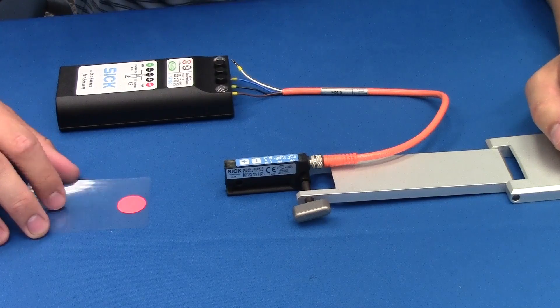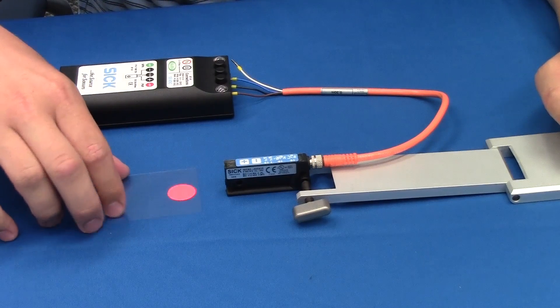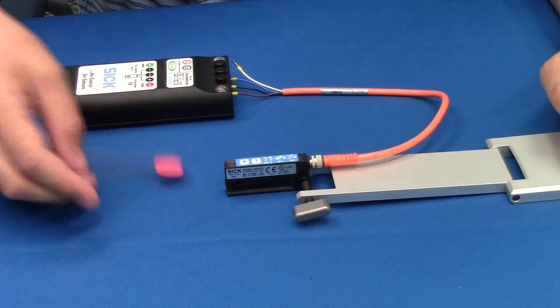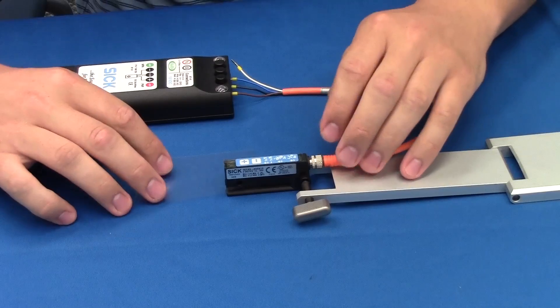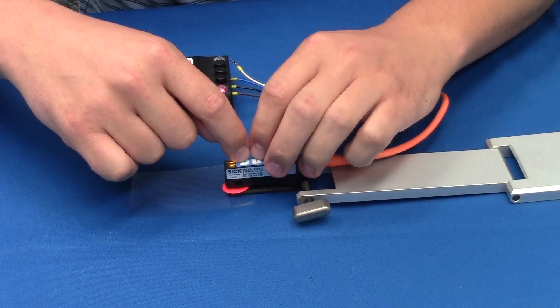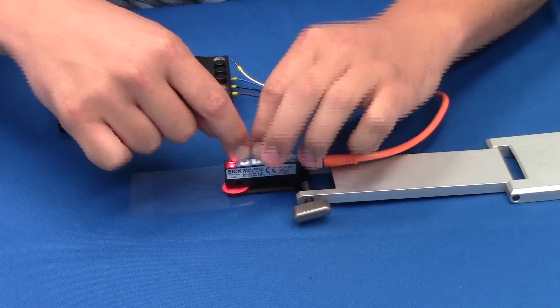To teach the sensor, we can do static or dynamic. We'll start with static using the target in the sample kit. We place the target label underneath the sensor and push both the plus and minus buttons for one second.